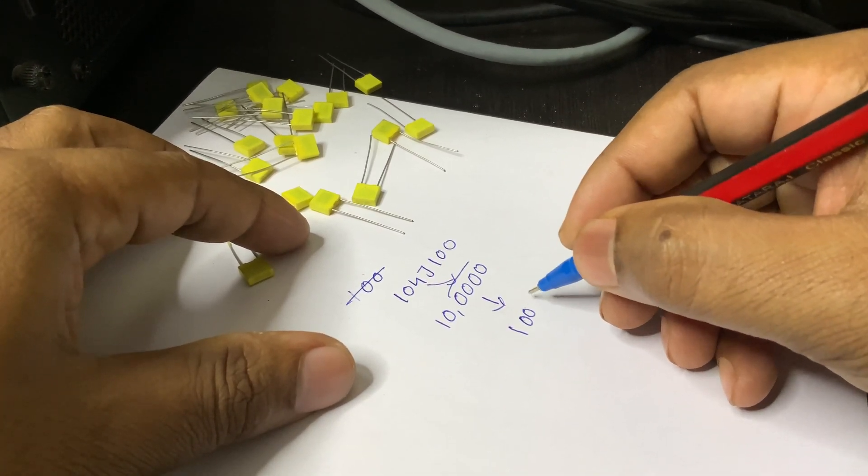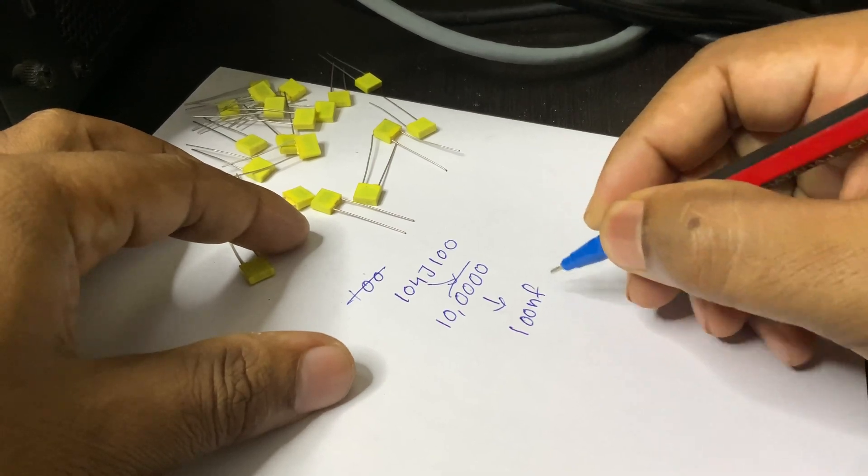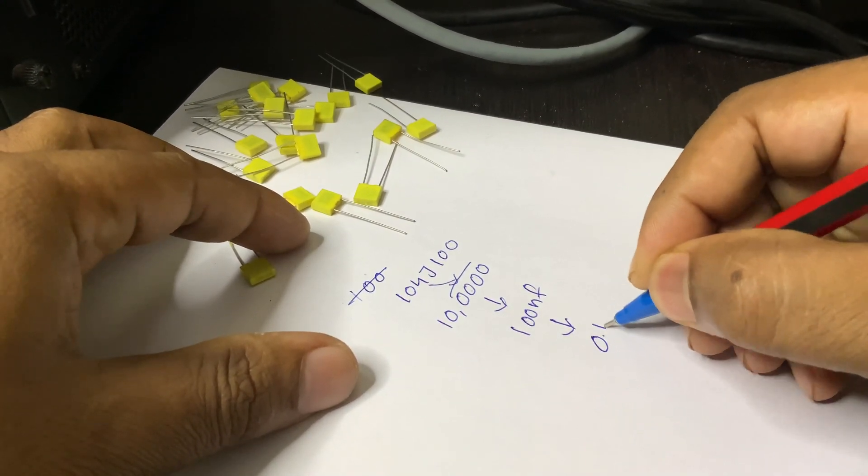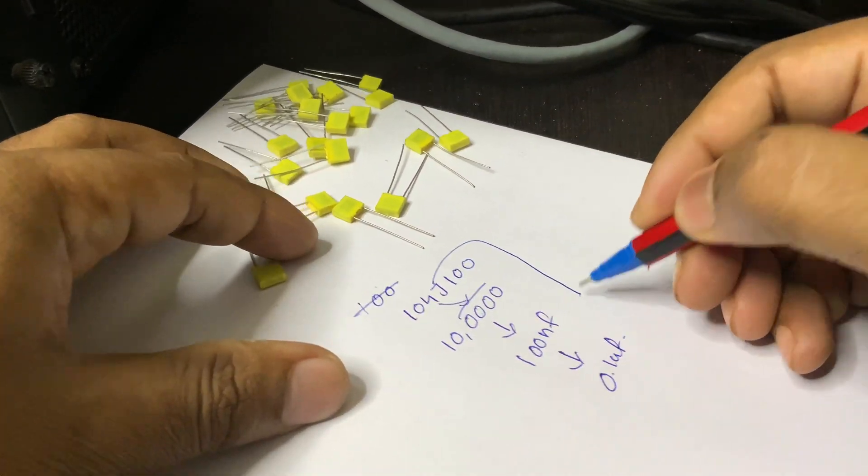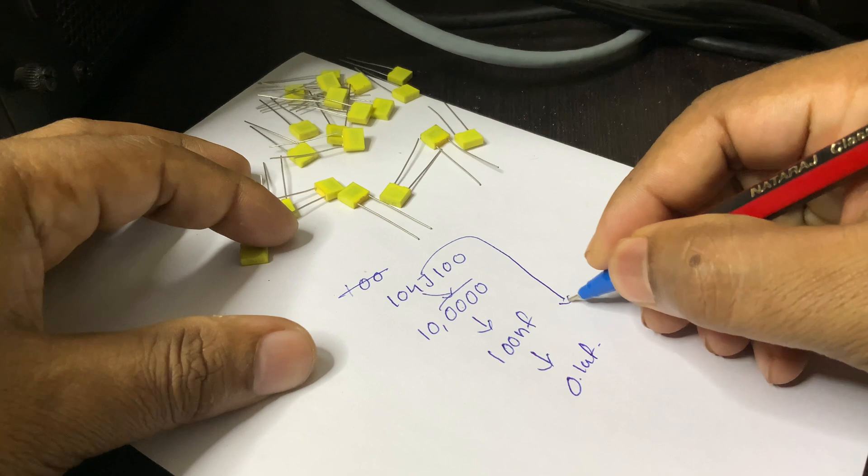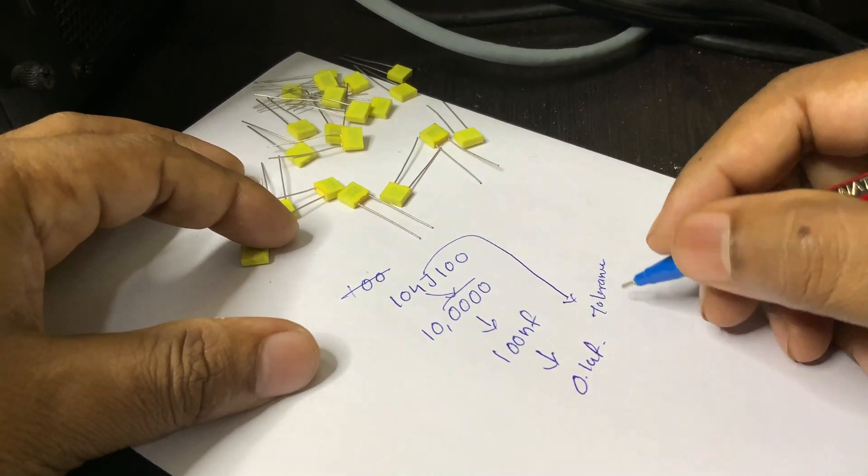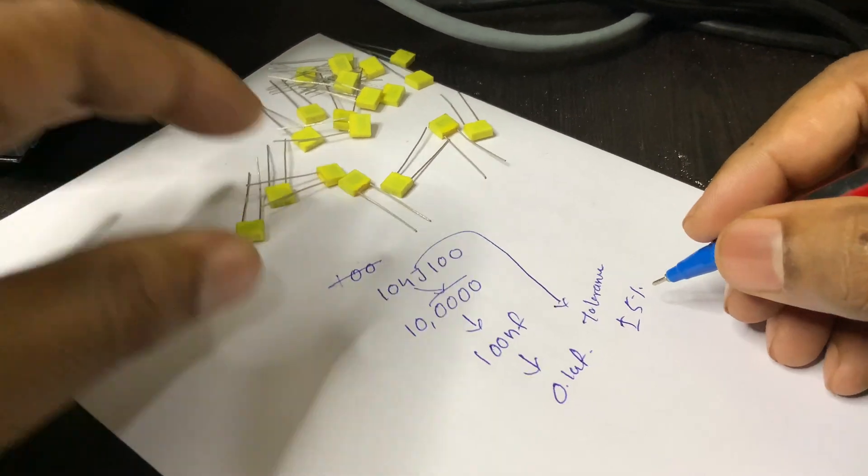These capacitors are typically found in a box-style casing, which may be made of plastic or epoxy-coated material, often used for film capacitors or ceramic capacitors. They are non-polarized components, meaning they can be connected in either direction in a circuit. The box-type design helps protect the capacitor and allows for easier handling, especially when used in densely packed circuit boards.